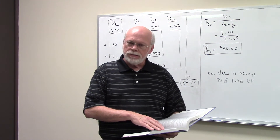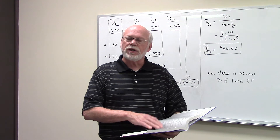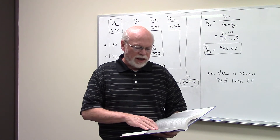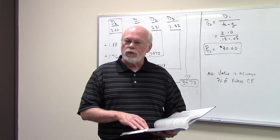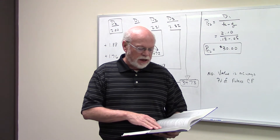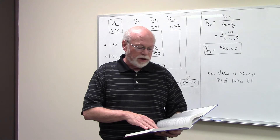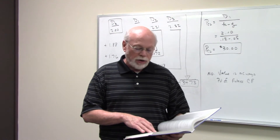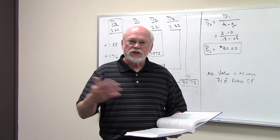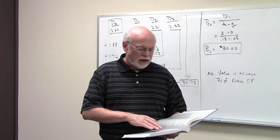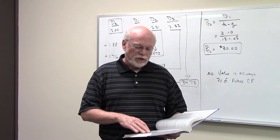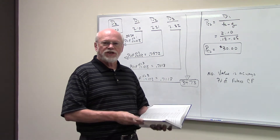Part E says use equation 9.2, which is the Williams model, the Gordon model, the constant growth model, to calculate the present value of the stock. Assume that the growth rate is a constant 5%. Part F asks: is the value of the stock dependent upon how long you hold the stock? If you plan to hold it for six years or eight years, what's the value of the stock? In other words, if your holding period is two years or five years rather than three years, would it affect the value of the stock you just calculated?